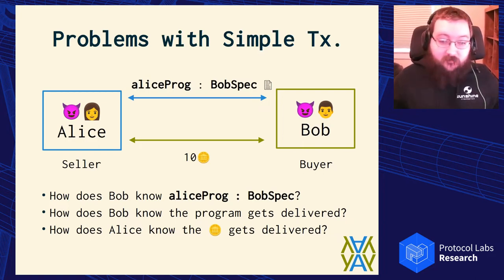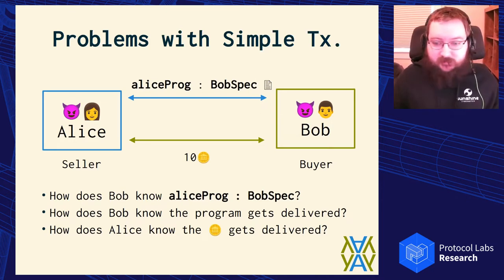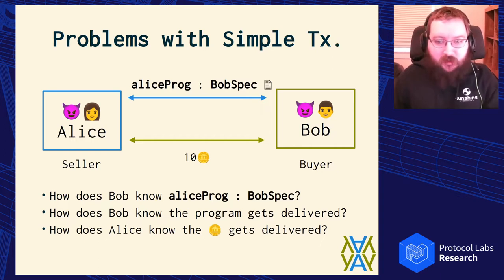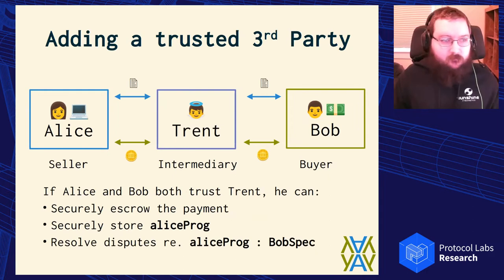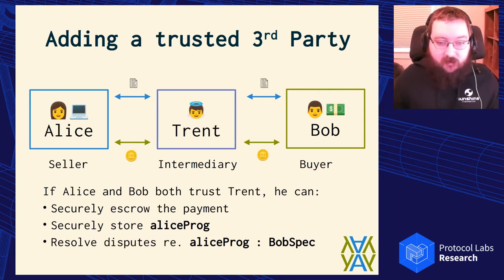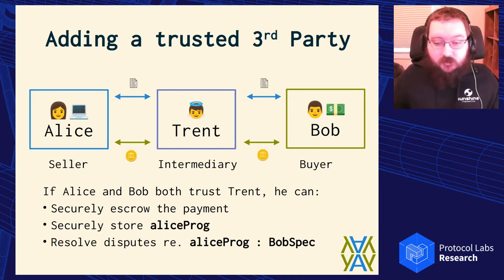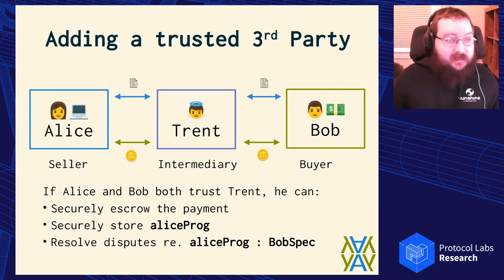If both parties trust one another, no problem — they can meet in the parking lot, exchange two USB keys, one with Bitcoin and one with the program. But if they don't trust one another, the usual way to solve this is to add a trusted third-party intermediary. We have Trent the trusted intermediary: if Alice and Bob both trust Trent, he can escrow the payment, store the program, and resolve any disputes about whether Alice has correctly met Bob's specification.